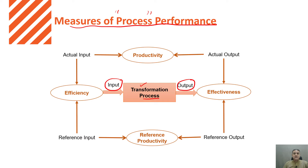When we are converting the input into the output by doing some set of activities, those activities must be value-added activities. If we are performing some non-value-added activity, those are known as wastages, and it is going to affect the productivity of our process. So in order to improve productivity, our process must be efficient as well as effective. When we are quantifying the process performance, three measurements are important.